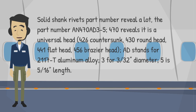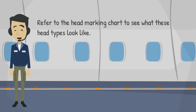Solid shank rivet part numbers reveal a lot. For example, the part number AN470-AD3-5: 470 reveals it is a universal head; 426 is countersunk; 430 is round head; 441 is flat head; 456 is brazier head. AD stands for 2117-T aluminum alloy. 3 indicates 3/32 inch diameter, and 5 indicates 5/16 inch length. Refer to the head marking chart to see what these head types look like.